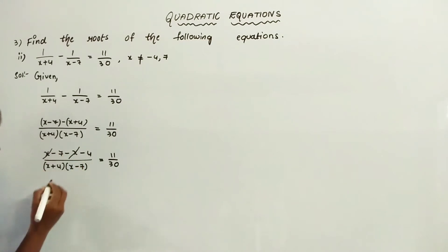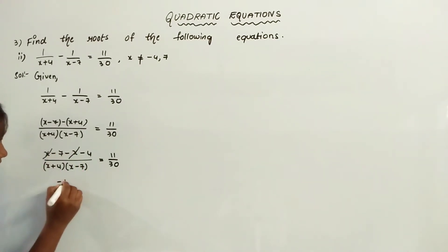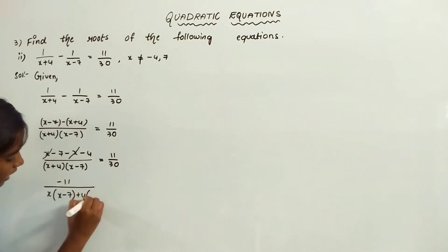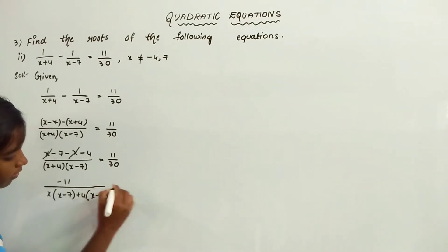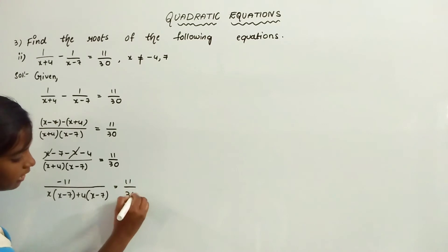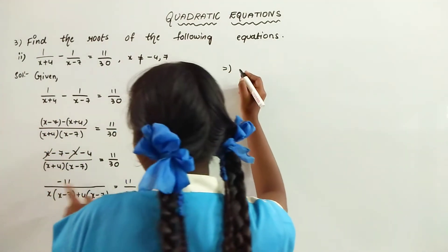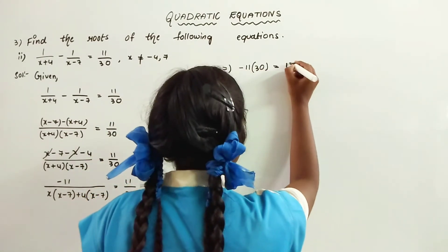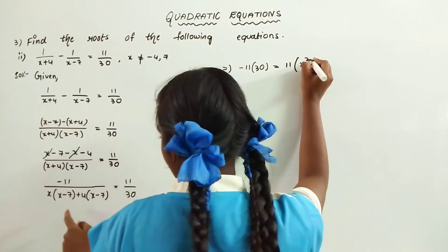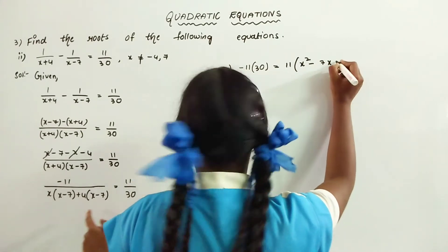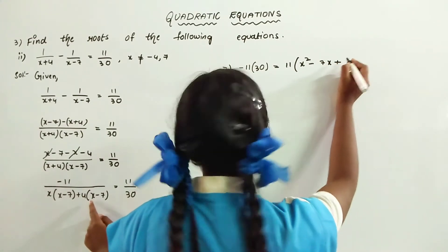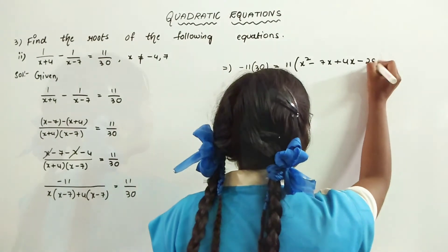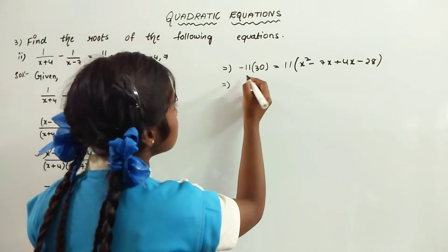x minus x gets cancelled. Minus 7 minus 4 gives minus 11, over x plus 4 into x minus 7, is equal to 11 by 30. By cross multiplying, minus 11 into 30 is equal to 11 into x squared minus 7x plus 4x minus 28.